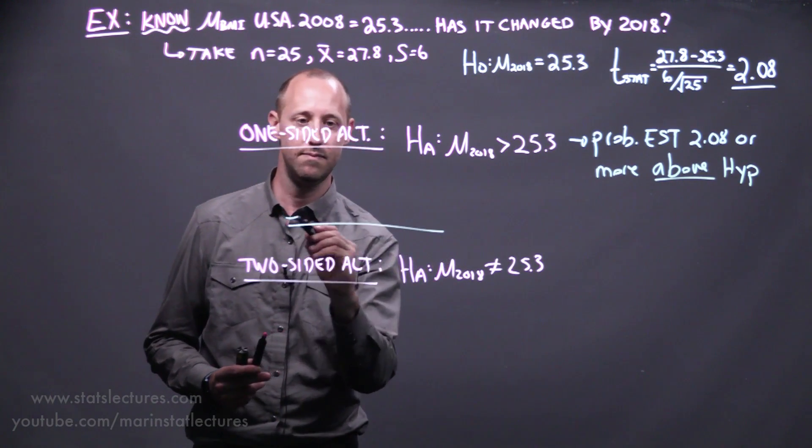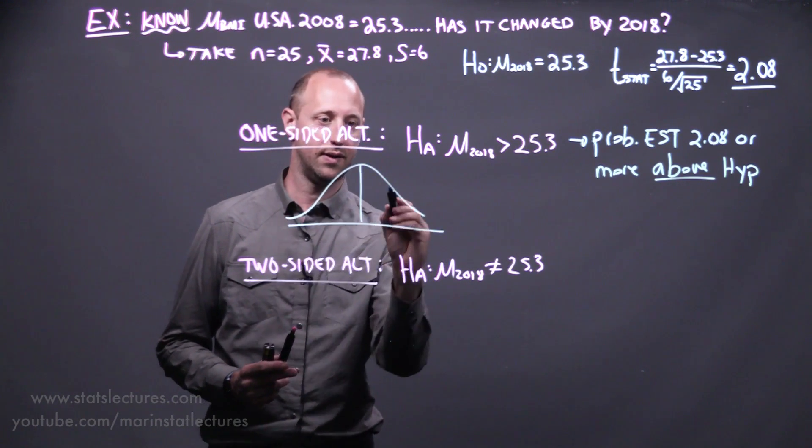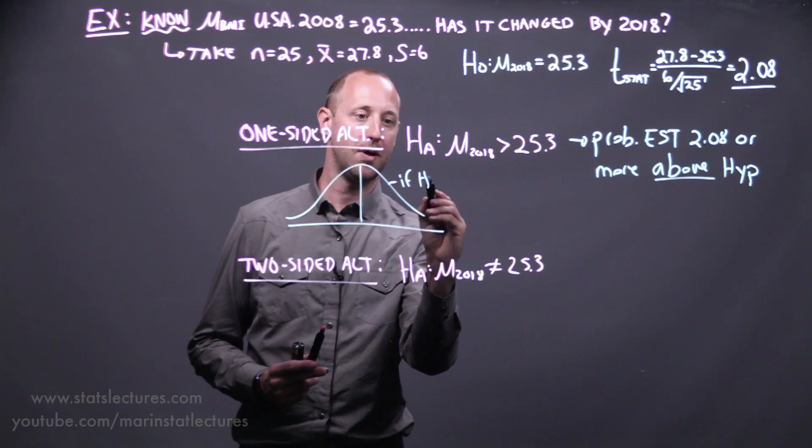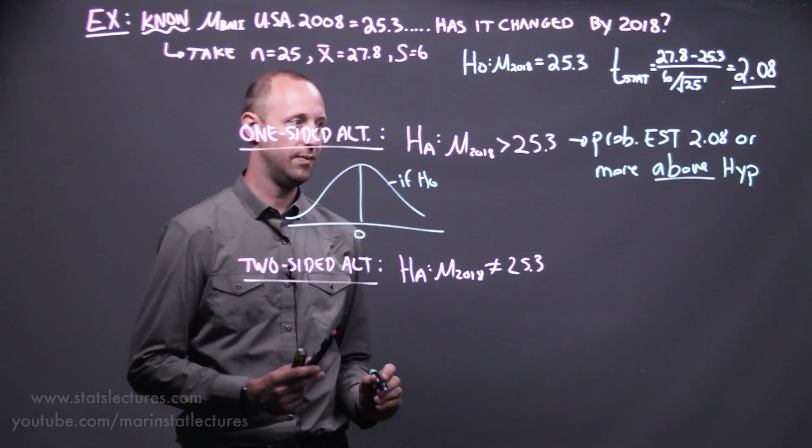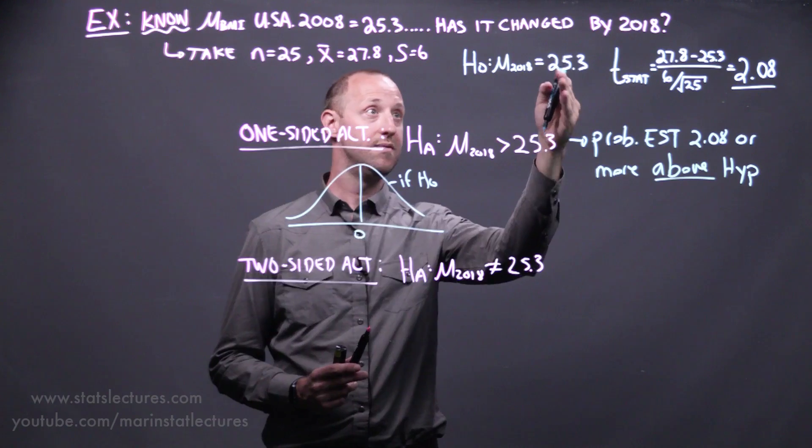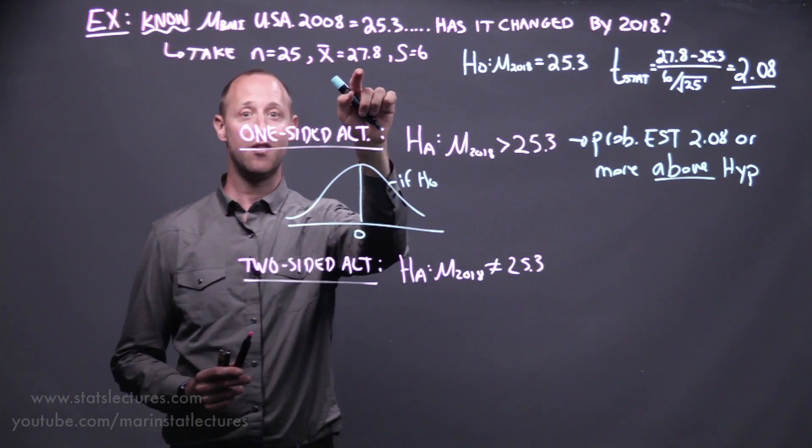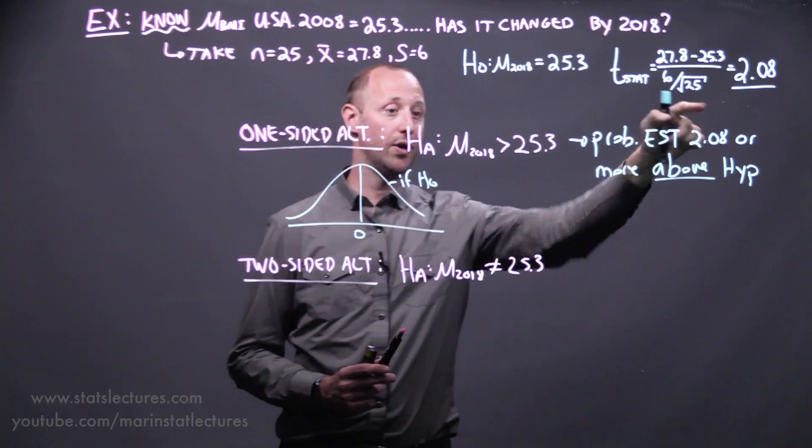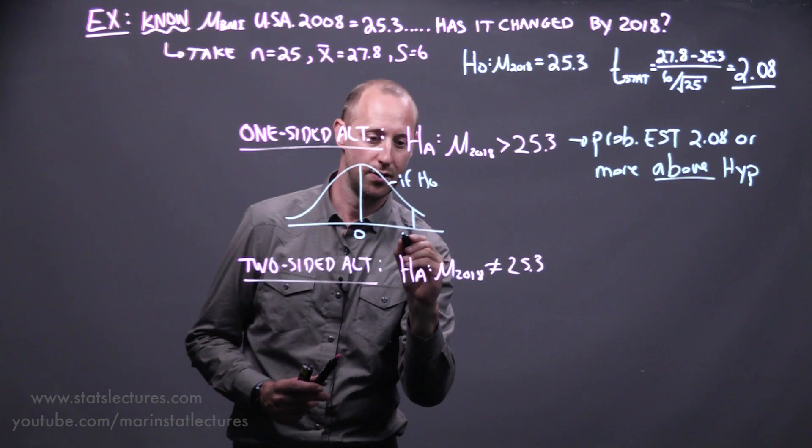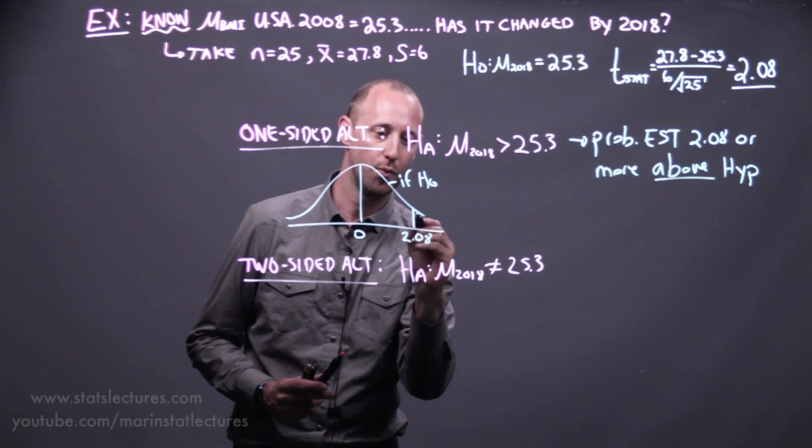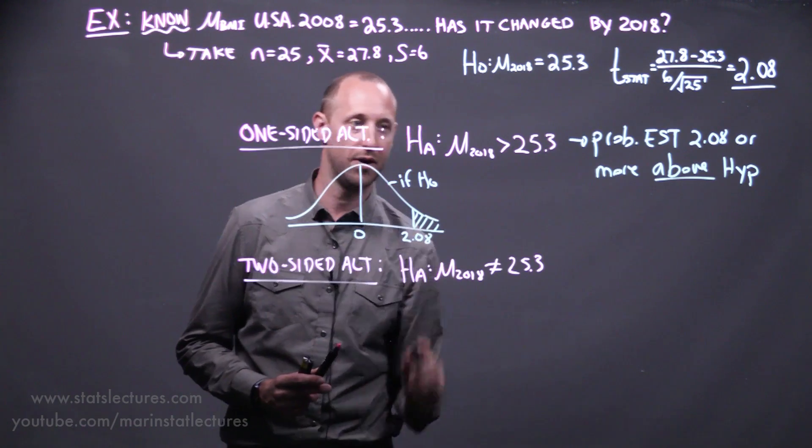If we draw that out here, and this is if the null hypothesis is true, what's the probability of getting an estimate of 27.8 or more, or an estimate that's 2.08 or more standard errors above the hypothesized value.